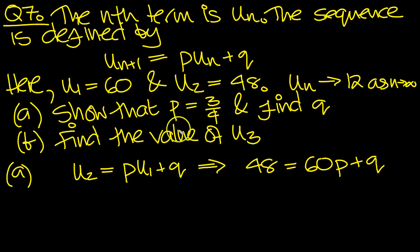We're also told that un tends to 12 as n tends to infinity. So when n gets large, these will both approach 12. This is equation 1, and we've also got that 12 equals 12p plus q, since they both approach 12 as n gets increasingly large.